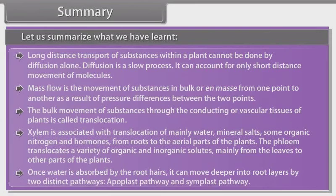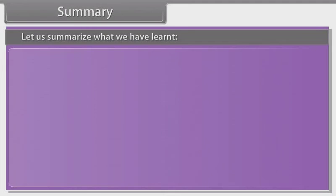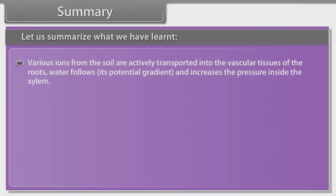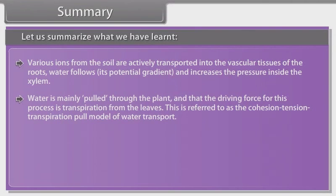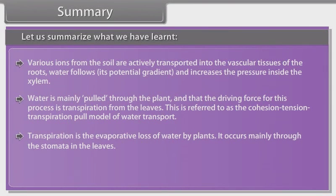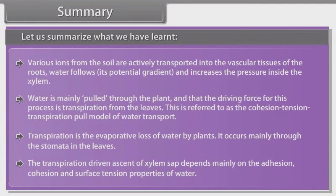Once water is absorbed by the root hairs, it can move deeper into root layers by two distinct pathways, apoplast pathway and symplast pathway. Various ions from the soil are actively transported into the vascular tissues of the roots. Water follows its potential gradient and increases the pressure inside the xylem. Water is mainly pulled through the plant and that the driving force for this process is transpiration from the leaves. This is referred to as the cohesion-tension transpiration pull model of water transport. Transpiration is an evaporative loss of water by plants. It occurs mainly through the stomata in the leaves. The transpiration-driven ascent of xylem sap depends mainly on the adhesion, cohesion and surface tension properties of water.